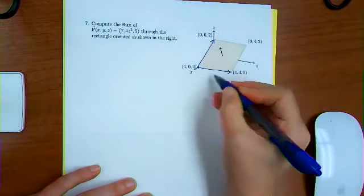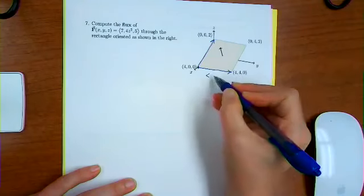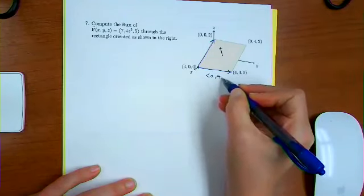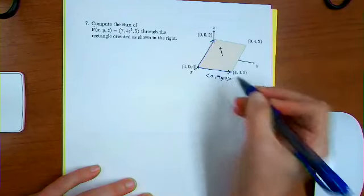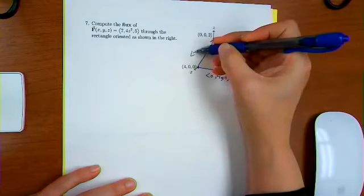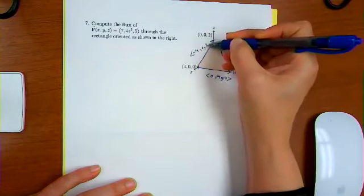And then this vector is going to be what? Zero, four, and zero. And that vector is going to be negative four, zero, and two.